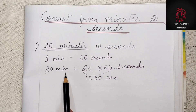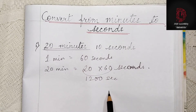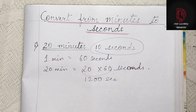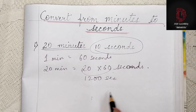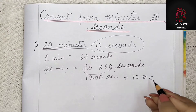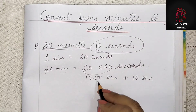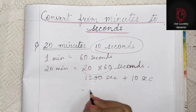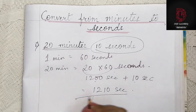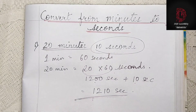We multiply 20 by 60 to get the seconds, and then we add the 10 seconds that were already given. So we get the answer 1200 plus 10, which is 1210 seconds.